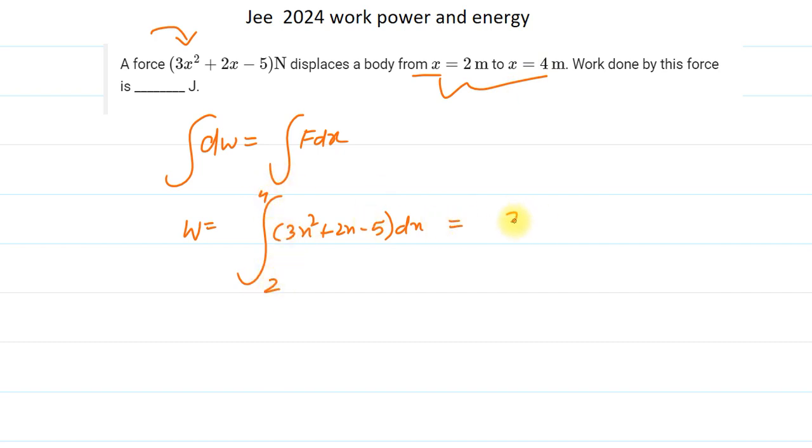We simply integrate the expression. It is 3x cubed by 3 plus 2x squared by 2 minus 5x, with limits 2 to 4. When we simplify, 3 by 3 cancels and 2 by 2 cancels.